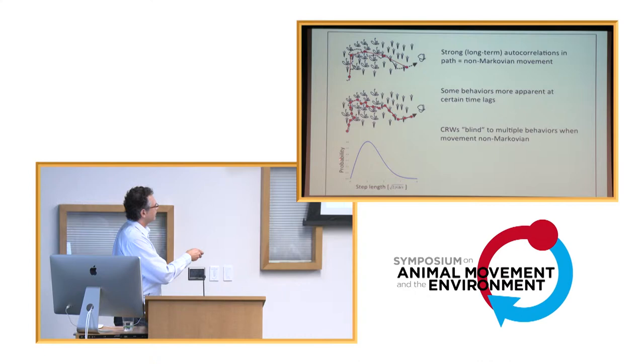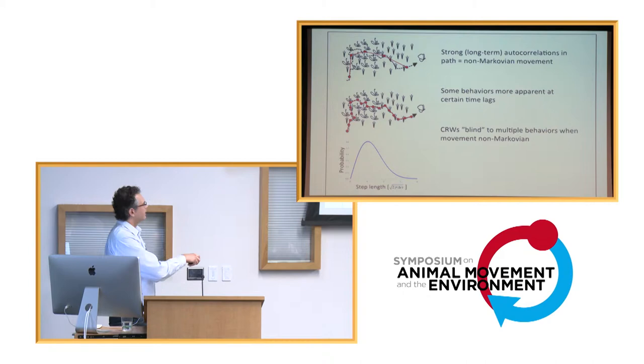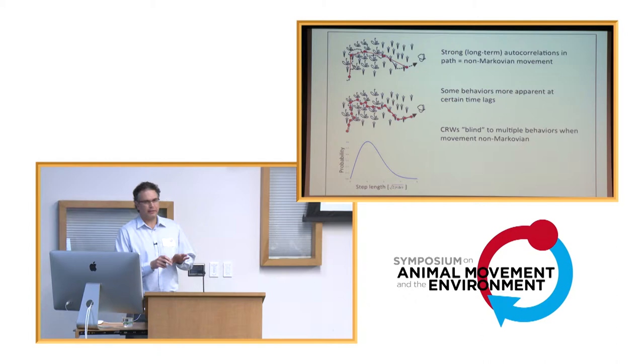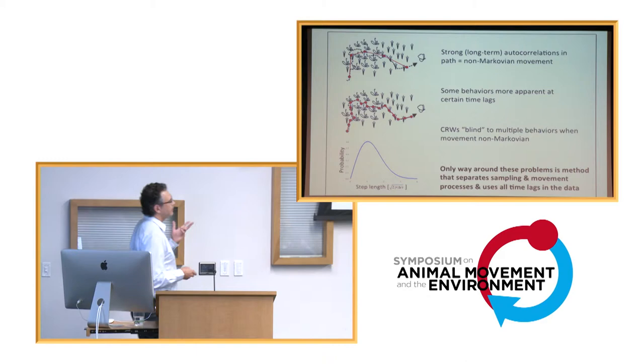When you discretize your path, you're going to end up with some kind of step length distribution. If all that you have in the data are these time lagged relationships, you're always going to get a nice unimodal step length distribution no matter what. You just can't see that those different things are in there.